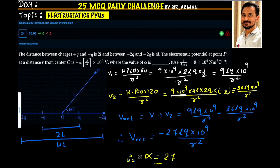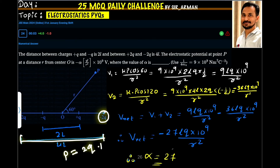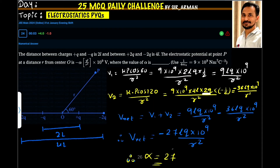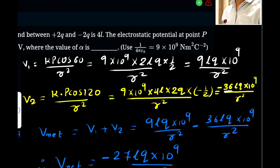So it is Kp cos 120 by R squared. K is 9 times 10 raised to 9. The dipole moment P for this system equals charge times separation: the charge is 2Q and the separation is 4L, so P equals 2Q times 4L. Cos 120 is minus 1/2. Solving this, the factor of 2 cancels and 9 times 4 gives 36, with a negative sign, giving minus 36LQ times 10 raised to 9 divided by R squared.